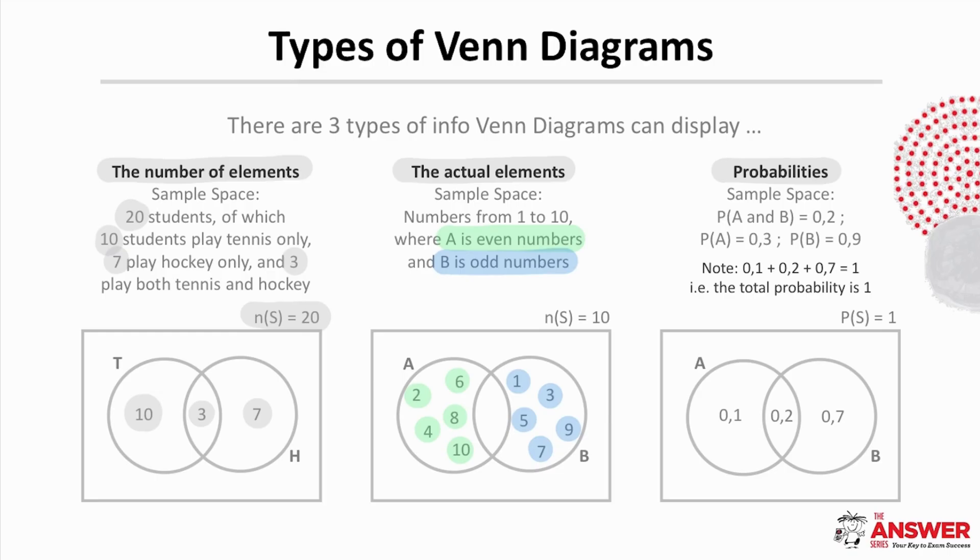We can place the 0.2 in the overlap but then in order to fill in the other probabilities we will need to do some calculations. So the probability of A only will be 0.3 minus the overlap 0.2 which equals 0.1 and then B only will be 0.9 minus the overlap of 0.2 and so this here must be 0.7.